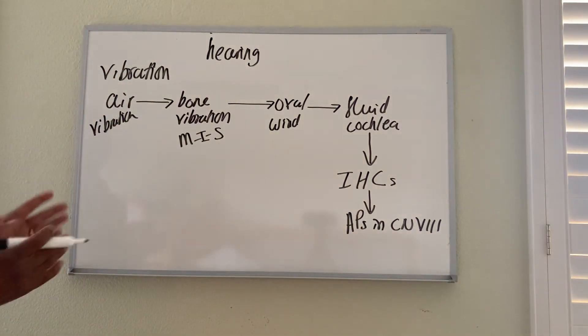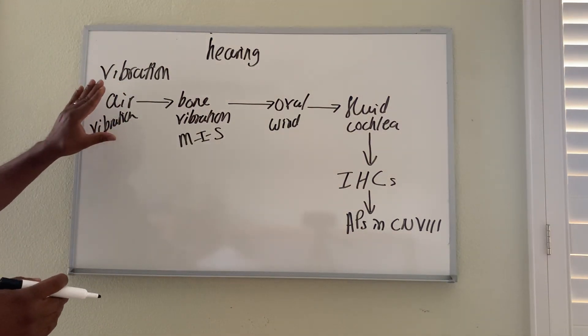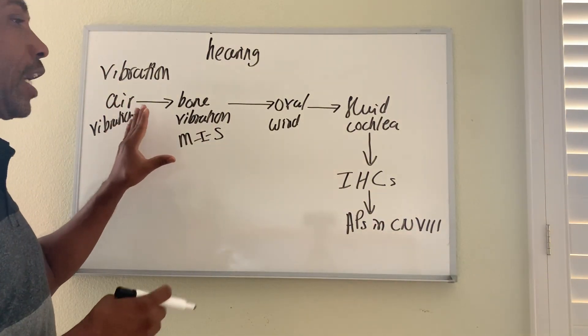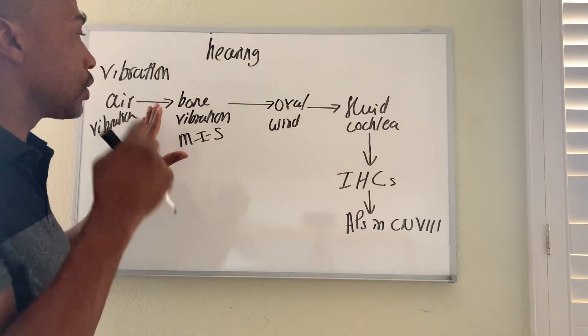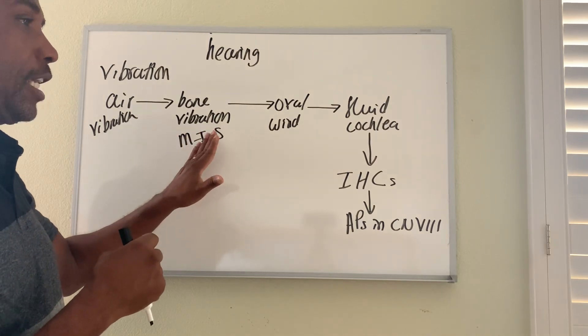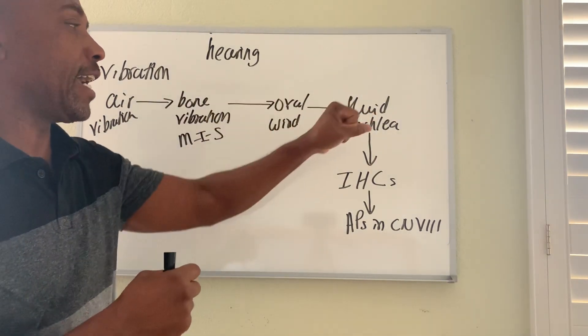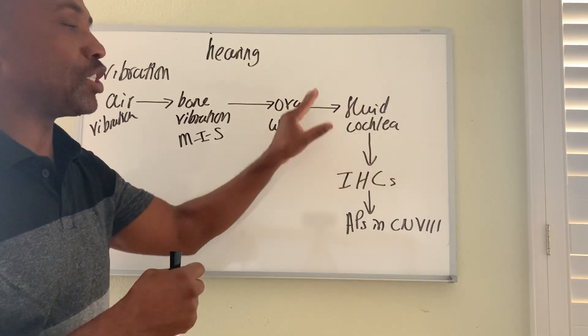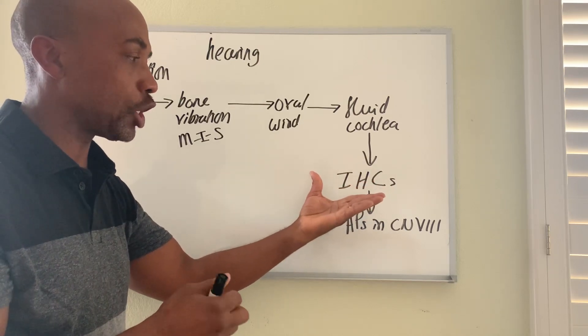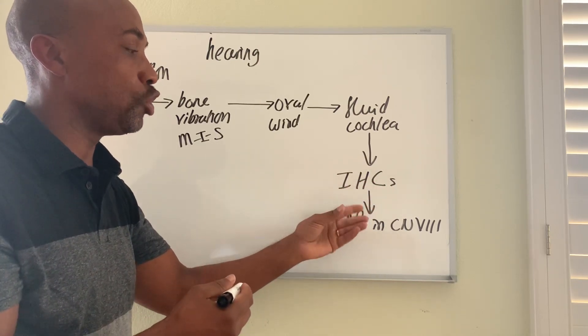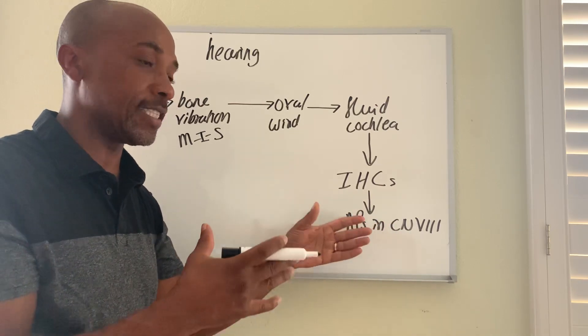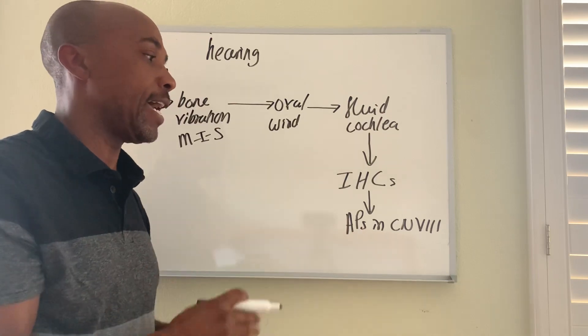So that's a path, really, overview of how air vibration creates action potentials in the auditory nerve. Again, air vibrates, travels through the ear canal to hit your tympanic membrane, to vibrate the malleus, incus, stapes, which then vibrates the oval window, which then moves fluid, perilymph, endolymph inside the cochlea, which eventually vibrates the inner hair cells. And those hair cells are linked to neurons of nerve number eight, and so action potentials in those neurons is what is then sent to our brain to be perceived as sound.